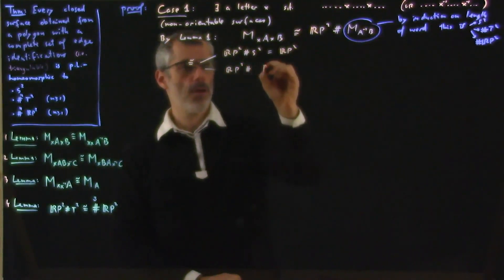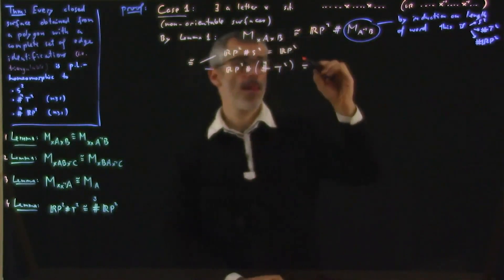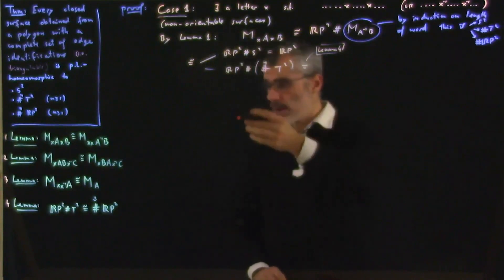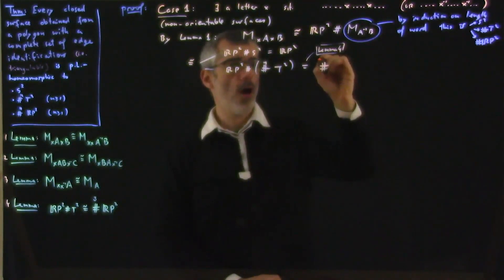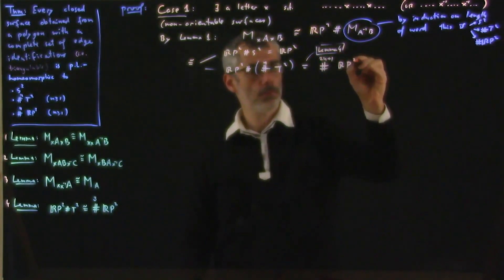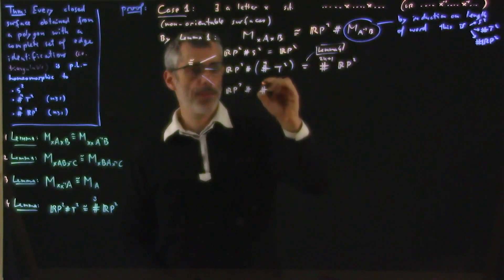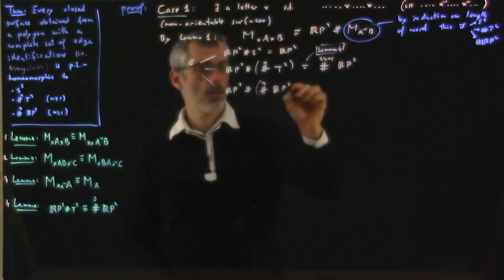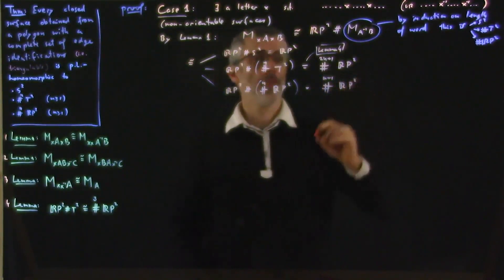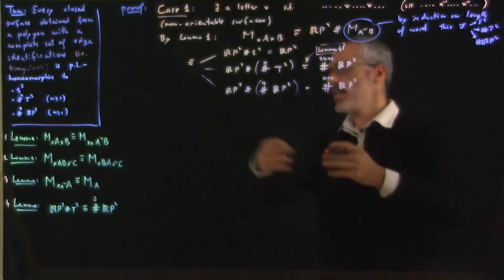Or RP^2 connect sum n copies of T^2, which by lemma 4 applied n times is the same thing as a connected sum of 2n plus 1 copies of RP^2. Or this is RP^2 and n copies of RP^2, in which case that's just n plus 1 copies of RP^2. So in all cases, we're good. And we have shown using the induction hypothesis that our surface is one of these.